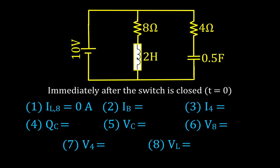There's no current through the inductor branch, but there is current flowing through the outer branch with the 4-ohm resistor and the capacitor. The current through the battery is the voltage divided by the resistance — 10 volts divided by 4 ohms — giving us a current of 2.5 amperes through the battery and the 4-ohm resistor.